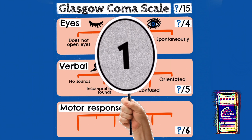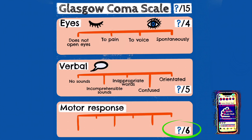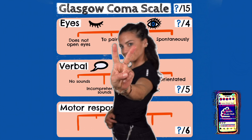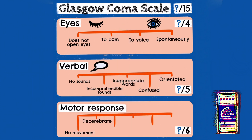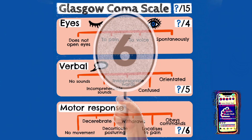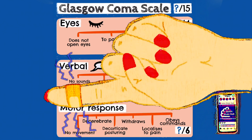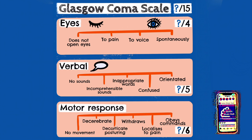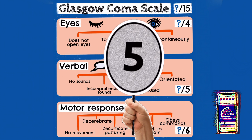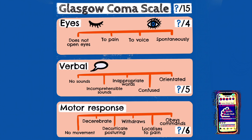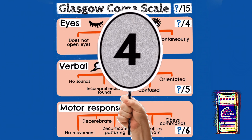Motor response is scored out of 6. When you're testing this, you need to ask the patient to do two-part motor commands. If they're able to follow commands, that is a 6. If they are unable to follow commands but can recognise pain and make a movement across their body to remove the pain, that would score a 5. If they are withdrawing from painful stimuli but not making a movement to actually stop it, this would score a 4.